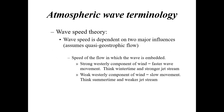Wave speed is dependent on two major influences. First, the speed of the flow in which the wave is embedded — how fast are the winds moving this wave along? If you have a stronger westerly component of wind, you have faster wave movement. Stronger westerly winds occur during wintertime because you have a stronger jet stream, which pushes waves along much quicker. A weak westerly component in the mid-latitudes — think summertime — gives a slower movement of waves.